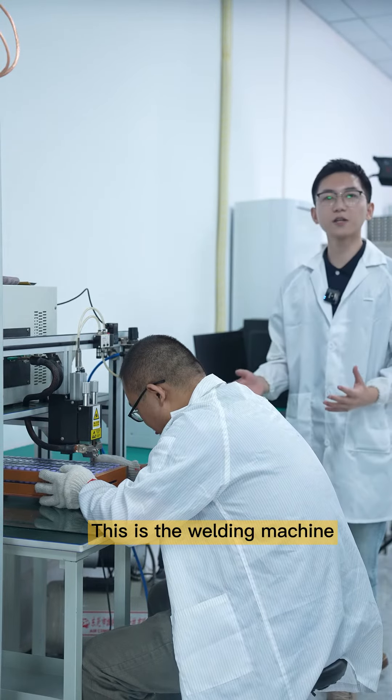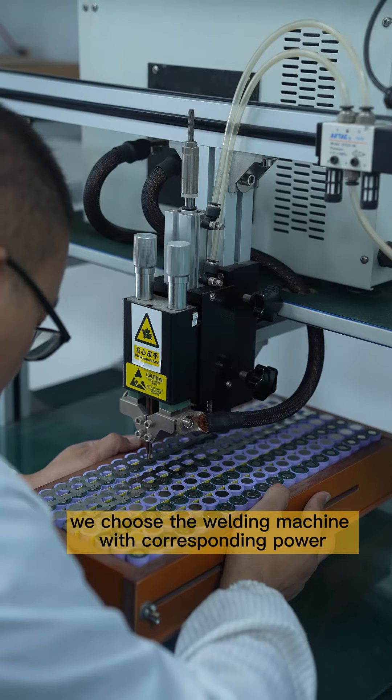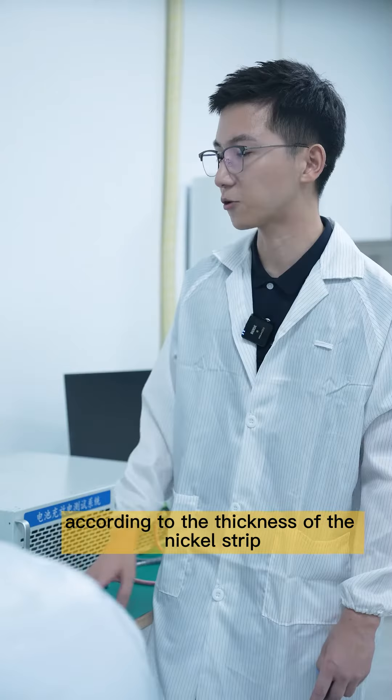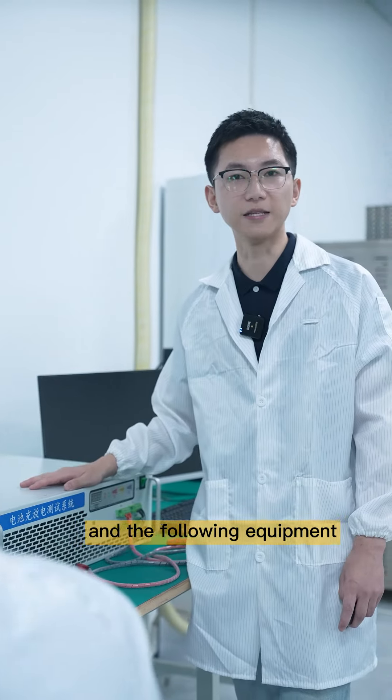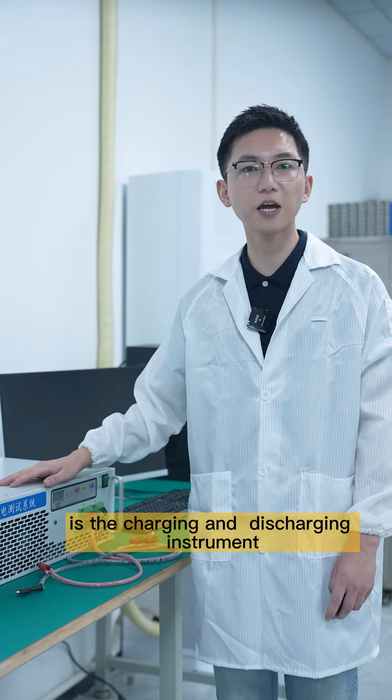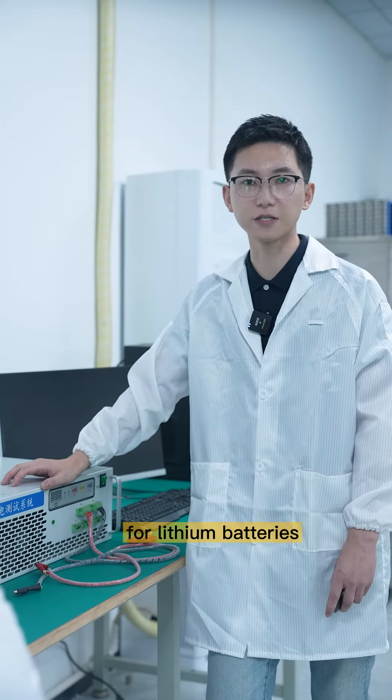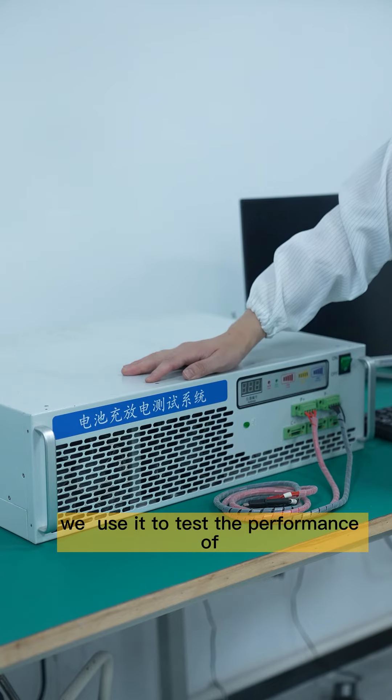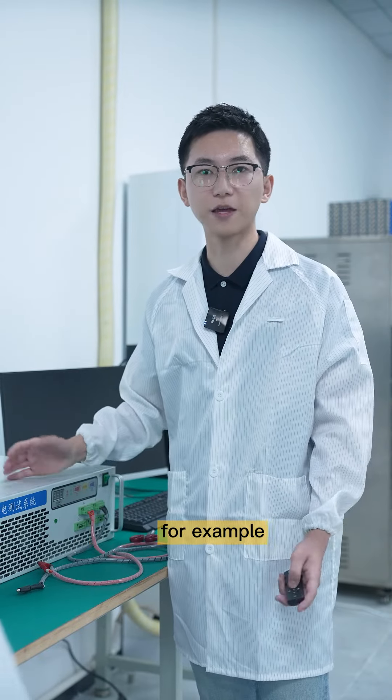This is the welding machine. We choose the welding machine with the corresponding power according to the thickness of the nickel strip. And the following equipment is the charging and discharging aging instrument for lithium batteries.